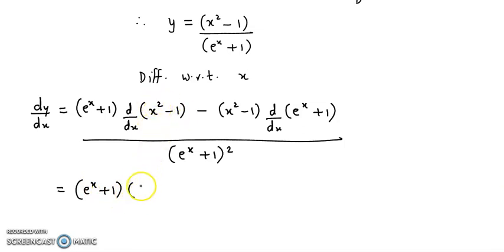The derivative of e^x is e^x, and the derivative of 1 is 0, so we close the bracket.